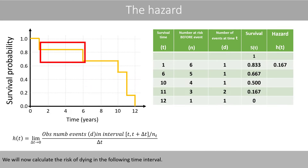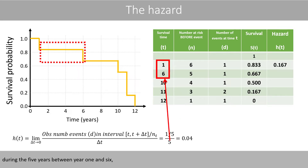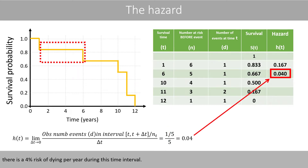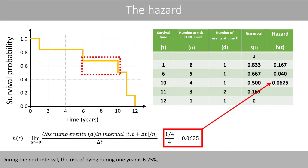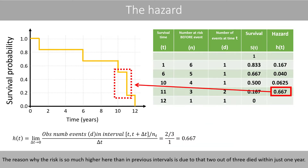We'll now calculate the risk of dying in the following time interval. Since one person died out of the five individuals that were still alive during the five years between year one and year six, there is a 4% risk of dying per year during this time interval. During the next interval, the risk of dying during one year is 6.25%, and during the next interval the risk of dying is 66.7%. The reason the risk is so much higher here is that two out of three died within just one year.